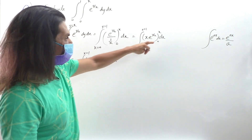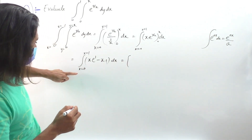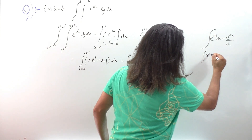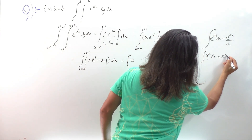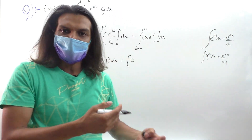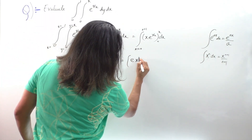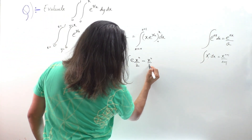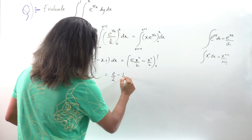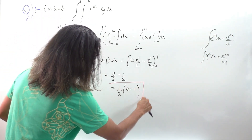Now integrating x·e − x with respect to x: e is a constant, so e·(x²/2) minus x²/2, limits 0 to 1. Substituting x = 1: e/2 − 1/2. Substituting x = 0 gives 0. So the final answer is (e − 1)/2. That's the solution.